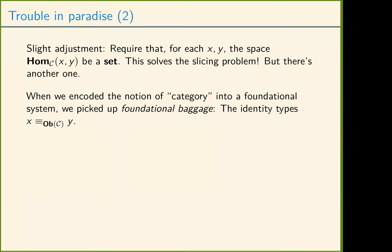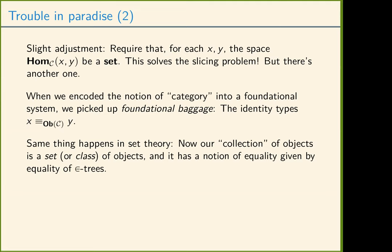But now there's another problem, and this problem is a bit more fundamental. When you encode the notion of category into a foundational system — in this case type theory — there's extra baggage in that encoding which wasn't there. The definition of category says we need identity for morphisms, but it doesn't say anything about identity for objects. But just by virtue of encoding the space of objects as a type, now we have identity types. The same thing would happen encoding into set theory: objects would have an equality which is an artifact of encoding, not a categorical notion.